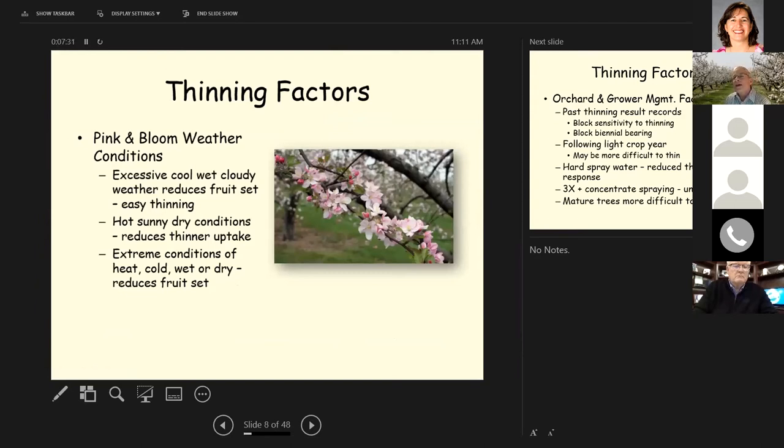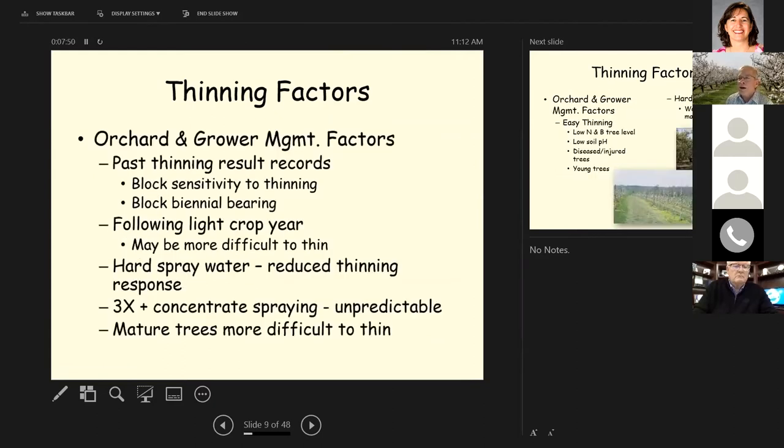There are thinning factors involving the pink and bloom weather conditions. Cool weather reduces fruit set and the flowers thin easier. Hot dry weather conditions reduce the thinner uptake. Extreme conditions, heat, cold, wet or dry tend to reduce fruit set. Looking at the orchard and grower management factors. Keep track of your past thinning experiences because we give you general recommendations but your orchard is a specific microclimate and things are not going to, this thinning is an art more than a science and so you've kind of got to get a feel for it. We're following a light crop year so right now we're set up for things being a little bit more difficult to thin. You've got hard spray water you reduce your thinning response. If you concentrate your thinning agents more than 3x thinning becomes very unpredictable. More mature trees are more difficult to thin than young trees.